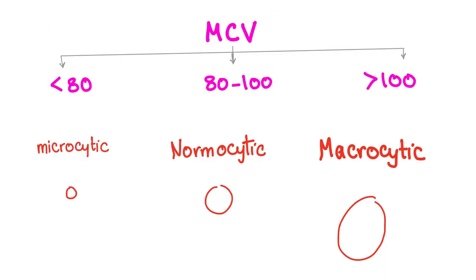As you are well aware, MCV determines if the anemia is microcytic, normocytic, or macrocytic. Anemia related to chronic kidney disease is normocytic, with MCV 80 to 100 femtoliters.